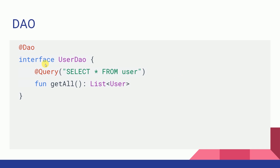Finally we have the interface UserDAO that contains all the functions to manipulate the database. You define an interface — you can name it anything, but since it is a DAO we have named it UserDAO. You need to annotate your DAO with @Dao, and inside this interface we define all the functions to access or manipulate the database. So we create the Database, Entity, and DAO — these three things.